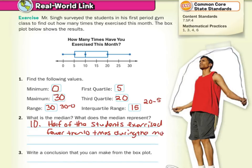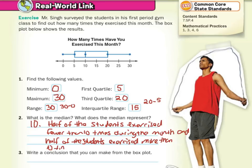And on the flip side, half of the students exercised more than 10 times. Every portion of this contains 25% of the data, meaning 25% of the students were between 0 and 5, 25% between 5 and 10, 25% between 10 and 20, and the other 25% were between 20 and 30. It's broken down into quarters or quartiles.